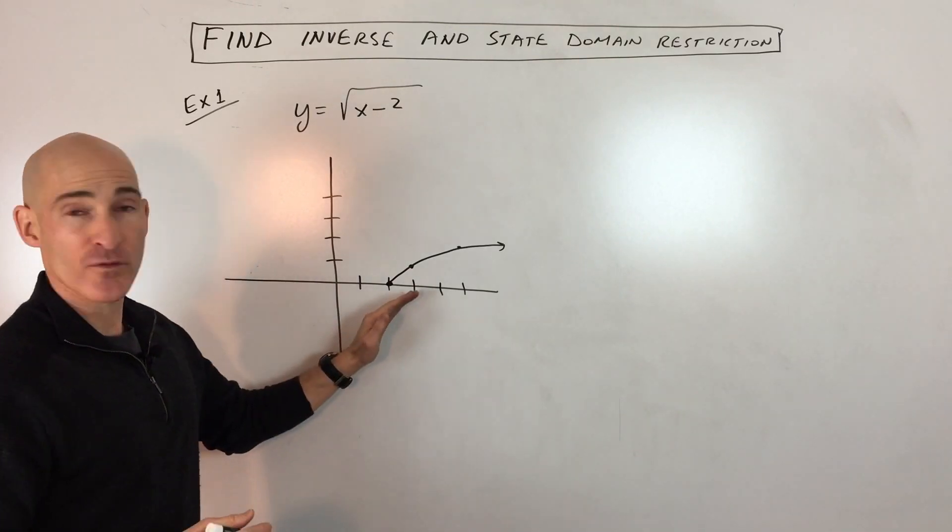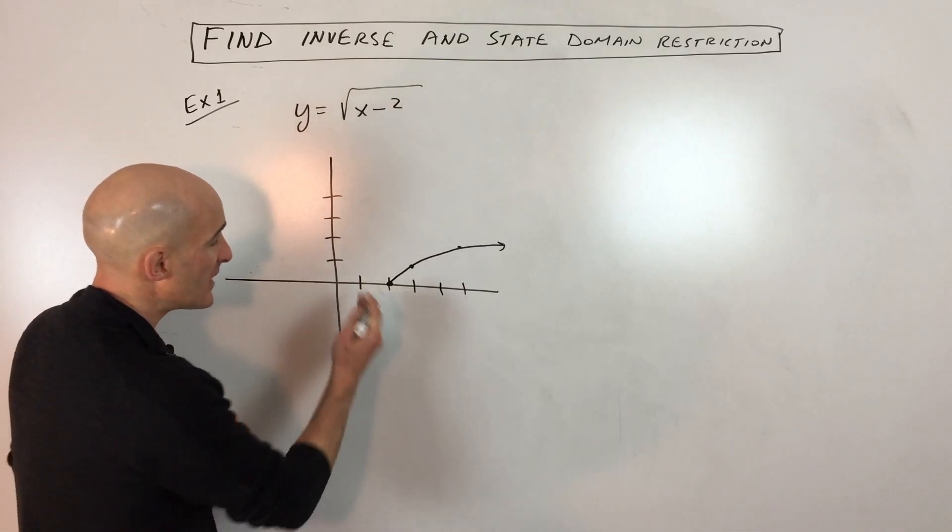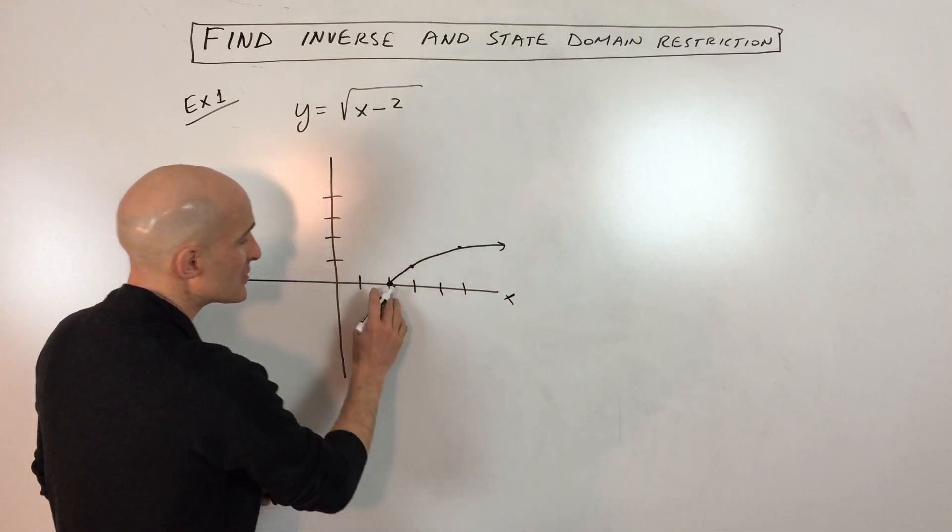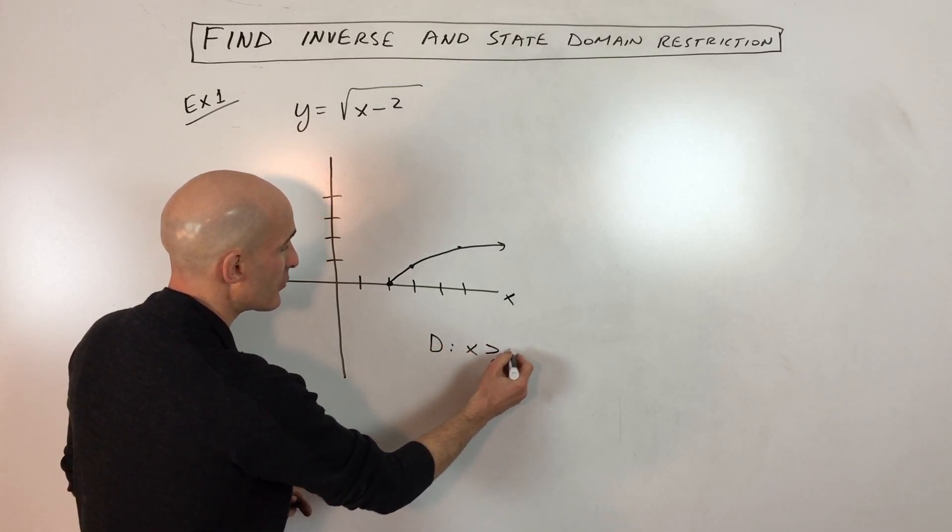So the first thing we do before we find the inverse is let's just go ahead and state the domain and the range for this graph. So the domain is what the x values can be. So in this case, the domain is going to be x is greater than or equal to 2.